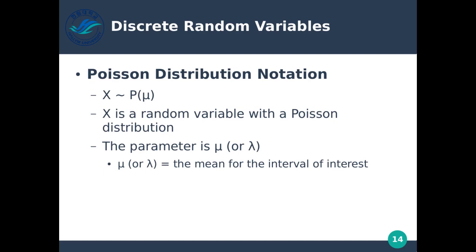That covers discrete random variables and the distributions that go along with them. I urge you to go through the book and look at the many examples for each distribution, as each one is powerful for specific types of problems. Make sure you understand what each distribution does. That's it for today — thank you very much.